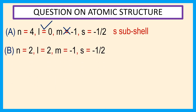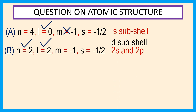See option b: for n is equal to 2, the possible subshells are 2s and 2p. But here l is equal to 2, which indicates the d subshell. For n is equal to 2, the 2d subshell is not possible.